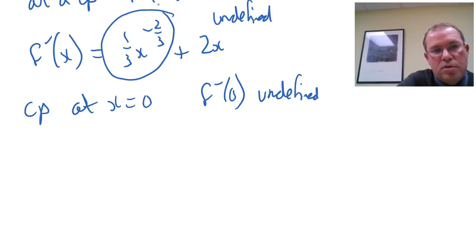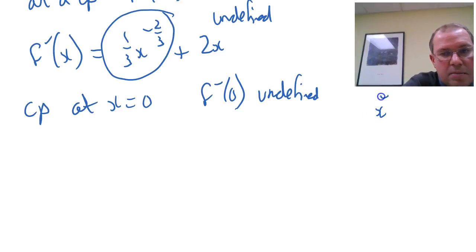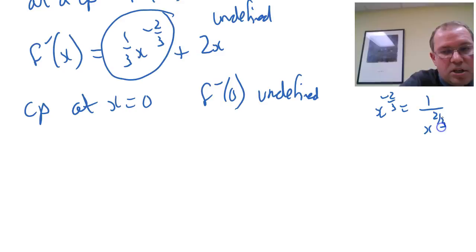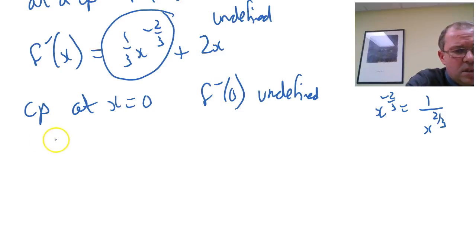x to the power minus two thirds is one over x to the two thirds. Of course, the denominator is zero because x to the power minus two thirds is one over x to the two thirds. When you sub in x equals zero, you're dividing by zero, so it's undefined. We've also got another critical point by solving the derivative equal to zero.